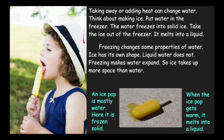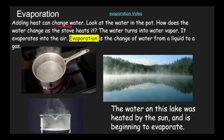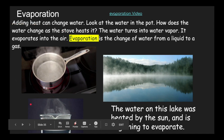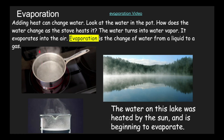Now we know what happens if we take away heat from water — it turns into an ice cube, it freezes. But let's see what happens when we add heat to water. Adding heat can change water. Look at the water in the pot — how does the water change as the stove heats it? We put the water in the pot and turn the stove on. It starts to boil and gets very, very hot. There's steam coming out of it. The steam is called water vapor, so the water turns into water vapor — it evaporates into the air. Evaporation is the change of water from a liquid to a gas.